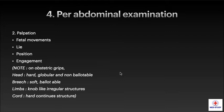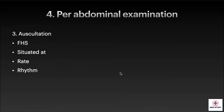Continuing with palpation, we have to palpate for fetal movements, fetal lie, fetal position, and engagement of the fetus. On obstetric grips, the head is a hard, globular, and non-ballotable structure, while the breech or buttocks are soft and ballotable structures. Limbs are seen as knob-like irregular structures, while the back of the baby is a hard, continuous structure.